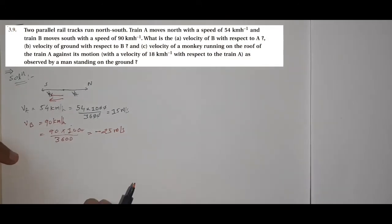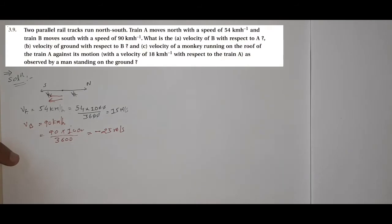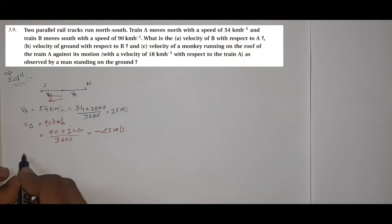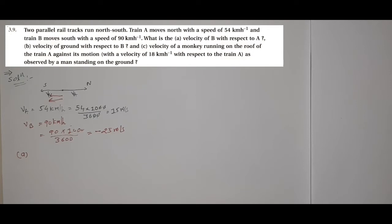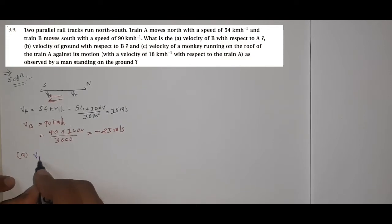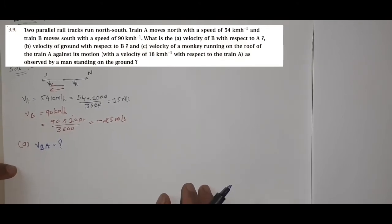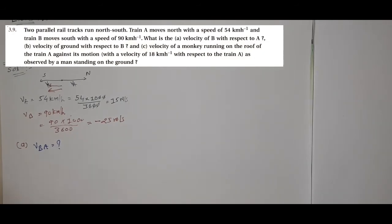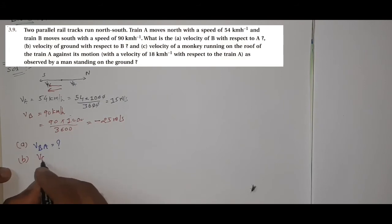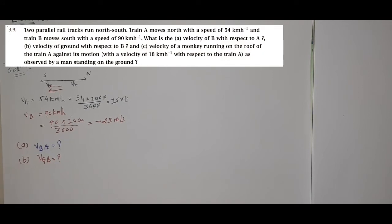Now let's define what is asked. First, we define the velocity of B with respect to A — that is part (a). Second, we define velocity of ground with respect to B — that is part (b). Now, ground means when we talk about Earth, velocity of ground with respect to B.